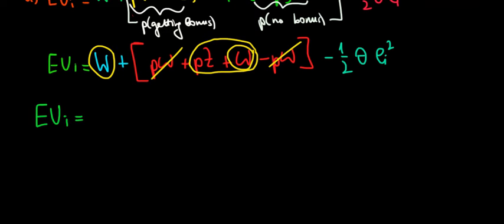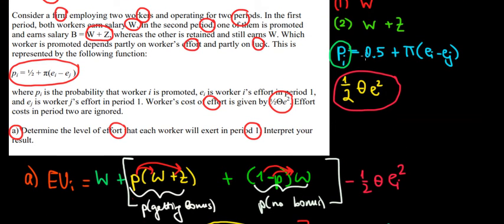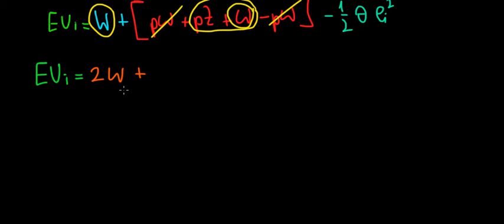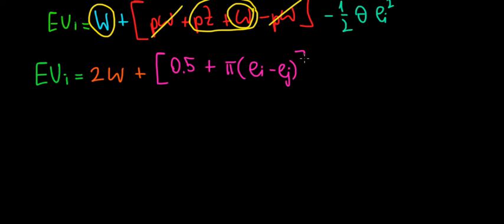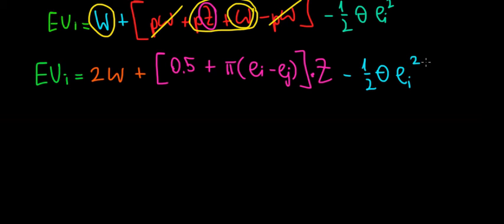Grouping together, the expected utility of the first worker equals 2W plus the probability of getting the bonus times the bonus Z. We now substitute the actual probability expression: 0.5 plus pi times the difference in effort levels, all times Z, minus the cost of effort 1/2 theta e_i squared.